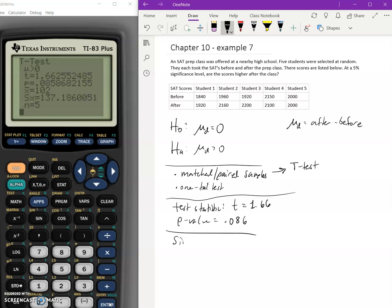So since the p-value equals 0.086, which is larger than 0.05, which is our alpha, we do not reject the null hypothesis.